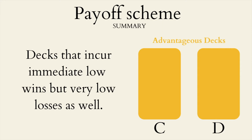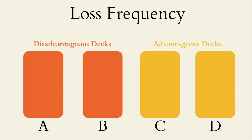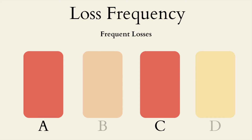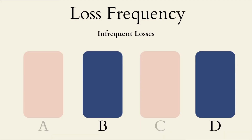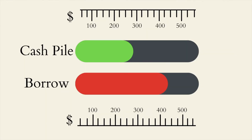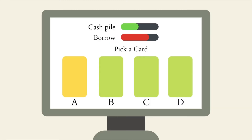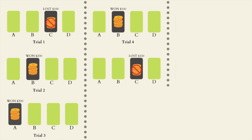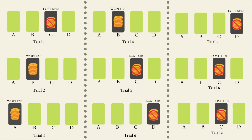In addition to the payoff schemes, the IGT also manipulates loss frequency. According to the task structure, the IGT presents frequent losses for the cards of decks A and C, while infrequent losses for the cards from decks B and D. The IGT presents constant feedback to the participant, wherein they track the amount of money that has been won and or lost as they gamble through. This information is constantly updated and presented while the participant performs the task on a computer. Participants are usually presented with approximately 100 trials of gambling.